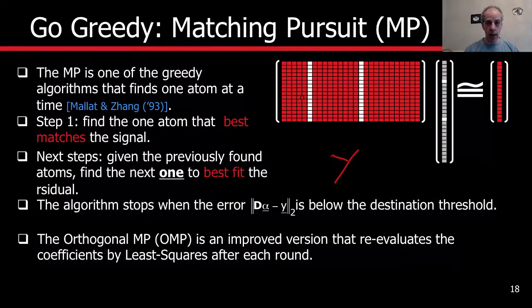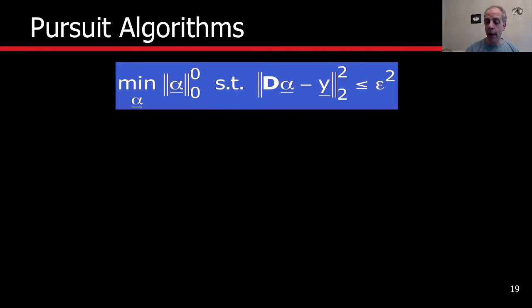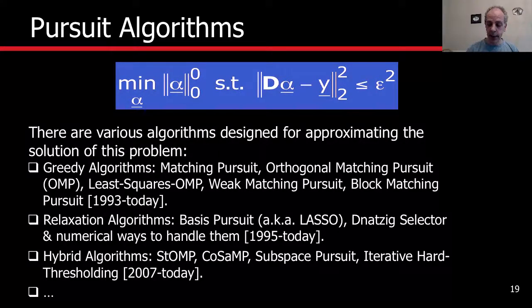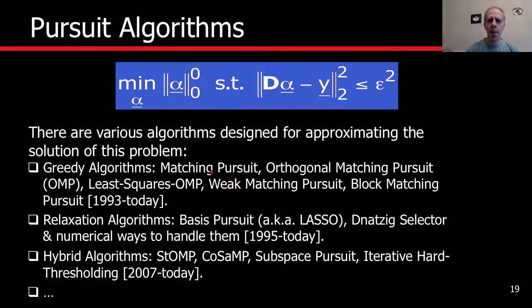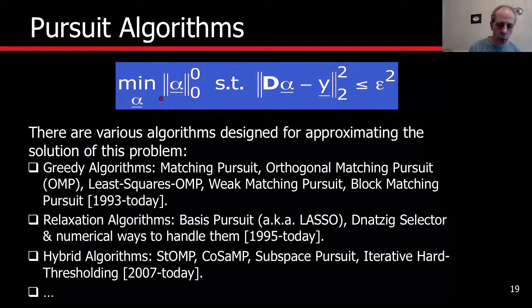That's a very simple algorithm, implemented in some of the software packages linked in the course. The basic idea is that we now have techniques to solve this problem — several classes. Greedy algorithms go one atom at a time, with many variations (e.g., picking two at a time, or orthogonal matching pursuit). Then there are relaxation algorithms, where the literature is also huge, relaxing the L0 problem into something that hopefully gives the same result.